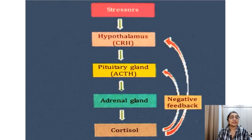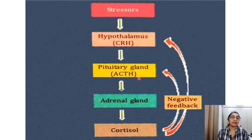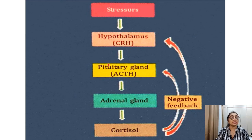Synthesis and release of corticosteroid: any stressor — physical stress, emotional stress, cold exposure, or pain — stimulates the hypothalamus, which releases corticotropin-releasing hormone (CRH). CRH stimulates the anterior pituitary gland, which secretes adrenocorticotropin hormone (ACTH). ACTH stimulates the adrenal gland to release corticosteroid. When corticosteroid is present in the blood, a negative feedback mechanism inhibits the release of CRH and ACTH, thereby inhibiting further corticosteroid release.